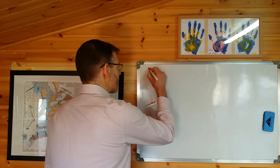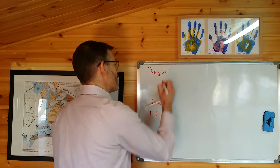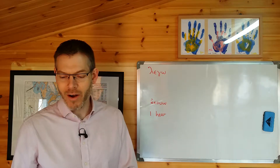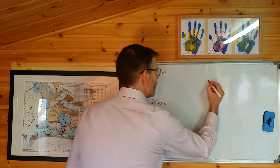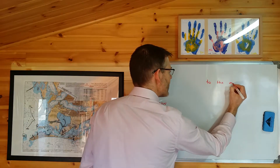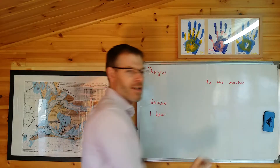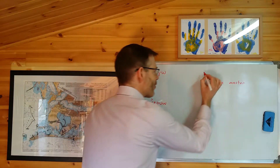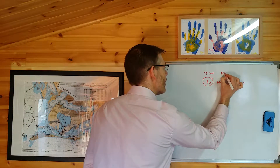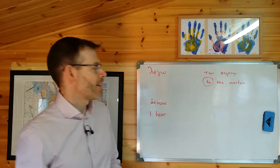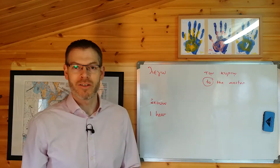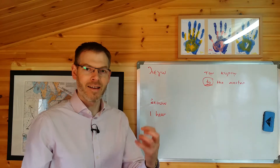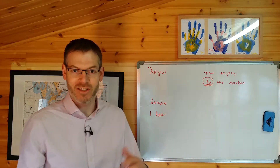The first one Duff highlights is the verb lego. I speak a word to the master is the example he gives. Well, it's easy to see why the phrase 'to the master' would go in the dative case rather than the accusative case, because in English it's got the word 'to' in front of it. And therefore, as Duff points out in his book, it's going to be 'to curio' rather than 'ton curion,' because in English you'd use 'to' to highlight that this is the person you're speaking to, rather than the thing that you're actually saying to them.